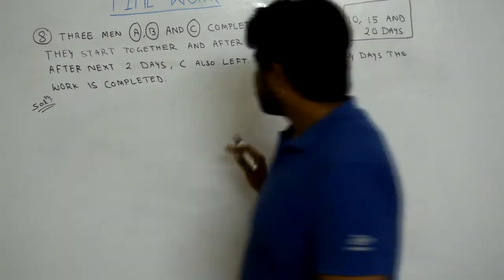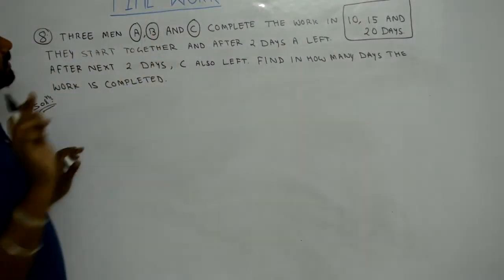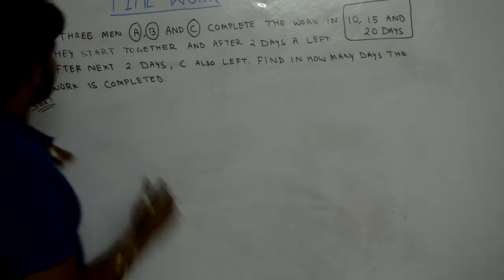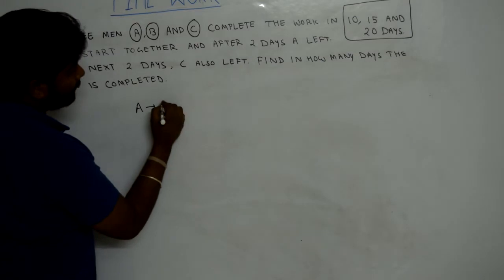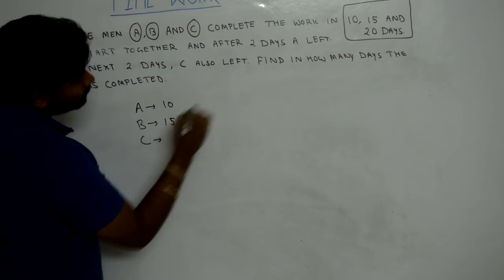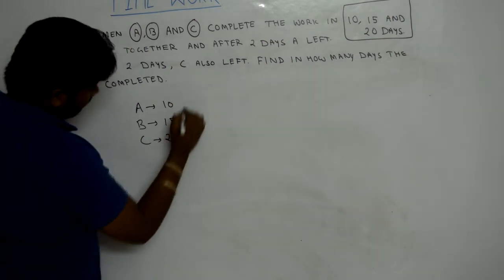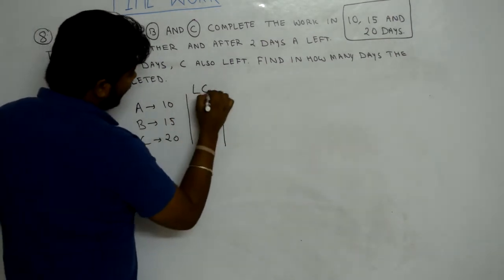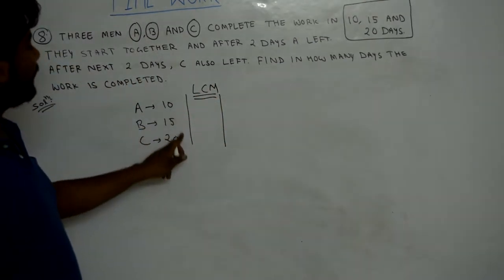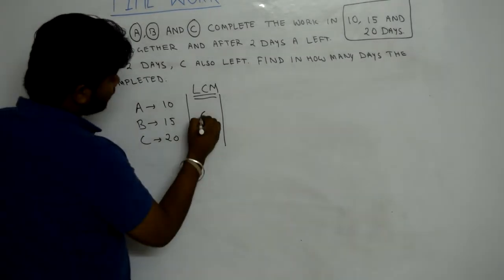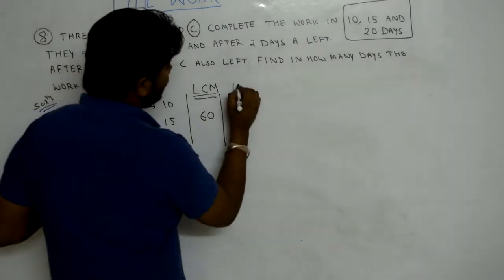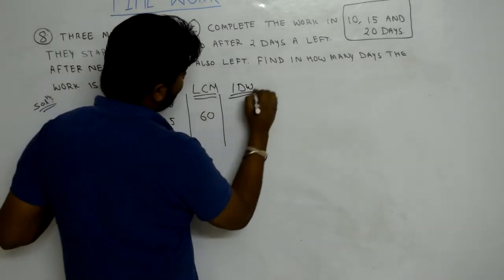How to attempt these questions? First of all, we write down the information given in the question: A completes the work in 10 days, B in 15 days, C in 20 days. In the second step, we find the LCM of 10, 15 and 20, which is 60.